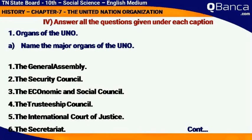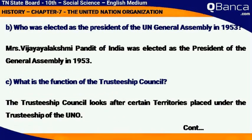Organs of the UNO. Name the major organs of the UNO. The General Assembly, The Security Council, The Economic and Social Council, The Trusteeship Council, The International Court of Justice, and The Secretariat.